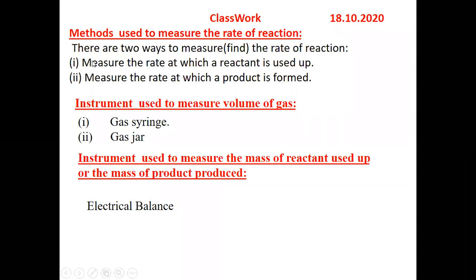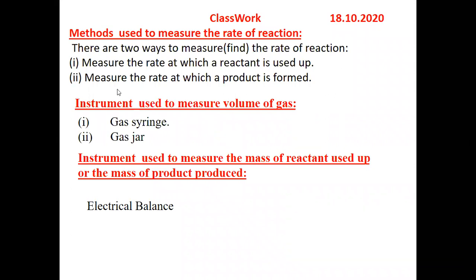The first method is to measure the rate at which a reactant is used up — how fast the reactant is consumed. The second method is to measure the rate at which a product is formed — at what speed the product will be produced.